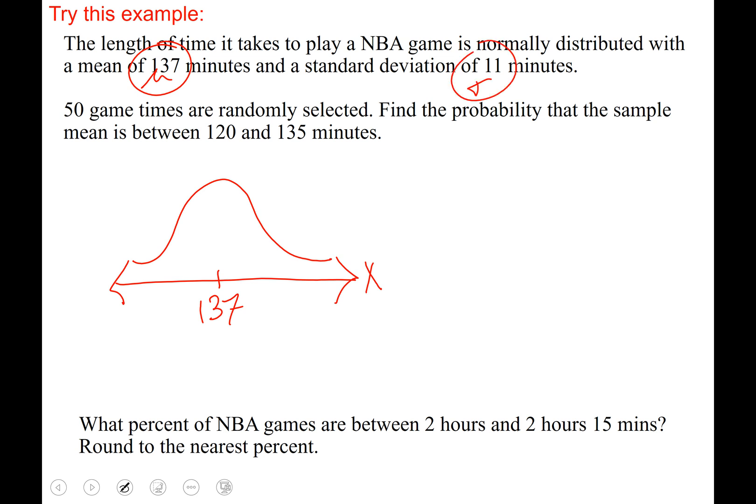50 games are randomly selected so that's our n, n equals 50. So you should be thinking hmm should I use the central limit theorem? My sample size is 50 and this problem is about means so yes we are going to want to apply the central limit theorem. Okay so we're asked to find the probability that the sample mean is between 120 and 135 minutes. Let me graph that for you, just make that the 120 say and this the 135 say, like that. So we're being asked to find the probability between these two.